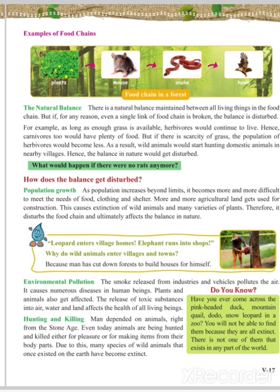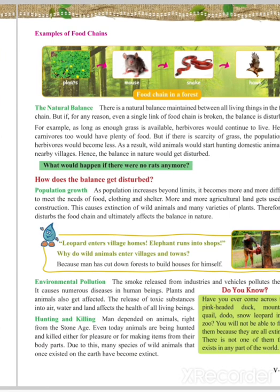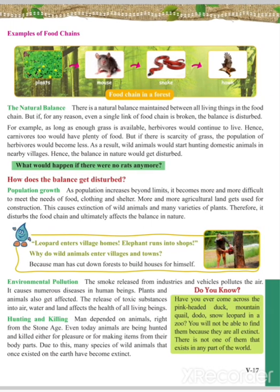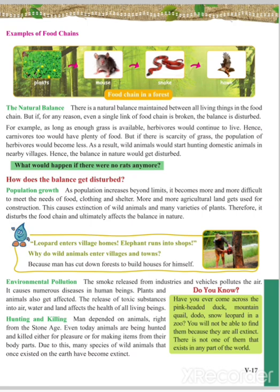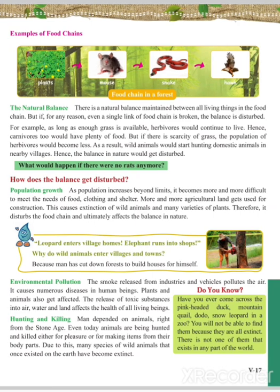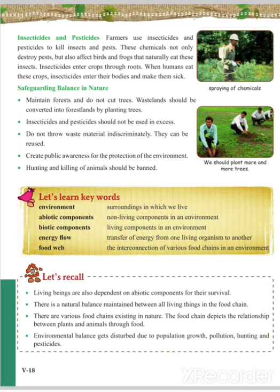Regarding hunting and killing: since the stone age, humans have depended on animals, and even today animals are hunted and killed for pleasure or to make items from their body parts. Due to this, many species of wild animals that once existed on Earth have become extinct — for example, the pink-headed duck, mountain quail, dodo, and snow leopard. Also, due to excess use of insecticides and pesticides in crop fields to get good yield, we have naturally killed the insects that are directly the food source for frogs and other animals.